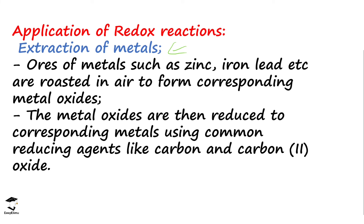Ores of metals, especially the ones that are low in the reactivity series like zinc, iron, and lead, are usually roasted in air to form their oxides. These oxides are then reduced by common reducing agents. The common reducing agents used in these processes are carbon and carbon monoxide. We will discuss in detail the reactions of how these metal oxides are reduced by these reducing agents.